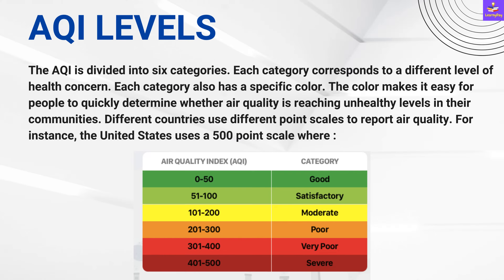Now let us understand the AQI levels. The AQI is divided into 6 categories. Each category corresponds to a different level of pollution, or health concern, and each category also has a specific colour. The colour makes it easy for people to quickly determine whether air quality is reaching unhealthy levels in their communities.